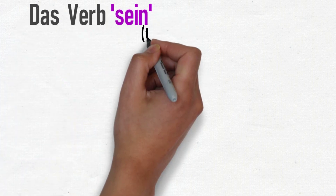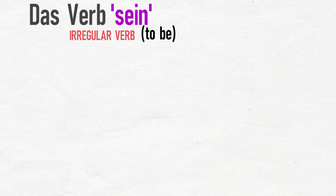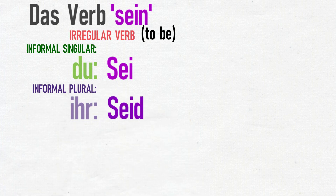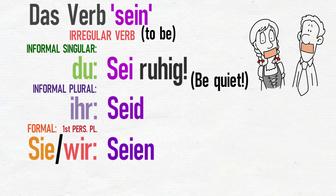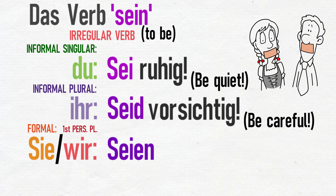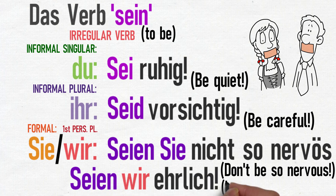The final thing to talk about with regards to the imperative is how the verb sein (to be) behaves. Sein is a very unusual verb and it's no different in the imperative. The imperative forms are: du form — sei; ihr form — seid; and the Sie and wir forms — seien. For example: Sei ruhig — Be quiet. Seid vorsichtig — Be careful. Seien Sie nicht so nervös — Don't be so nervous. Seien wir ehrlich — Let's be honest.